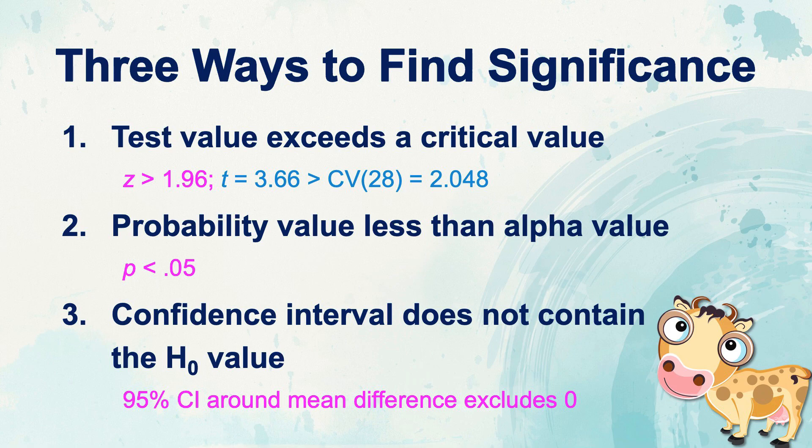The first is a model of hypothesis testing in which we establish a critical value or cutoff score, and only test values that exceed that predetermined cutoff score are statistically significant. For example, we may be looking for z-scores greater than 1.96, or we look up a critical value of 2.048 in a t-table. If the t-test statistic is 3.66, it exceeds that cutoff score.